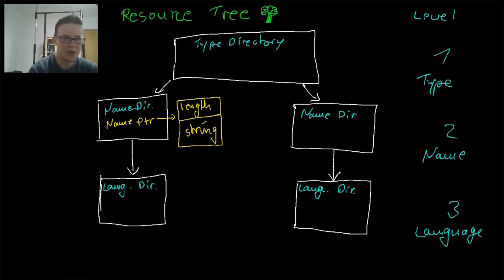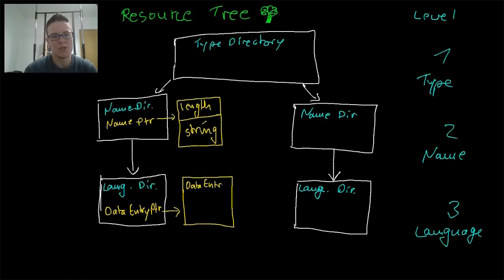So the language directory, it has a language identifier. Every ID stands for a certain language. There are also some tables out there where you can look them up. But usually if you have a parser, it will interpret this for you. So most of the time you don't need the tables. But more importantly, the language directory has a data entry pointer. And the pointer points to a small data structure, the so-called data entry, which determines the size and the location of the actual raw data for the resource. So let's quickly complete this for the other resource as well.